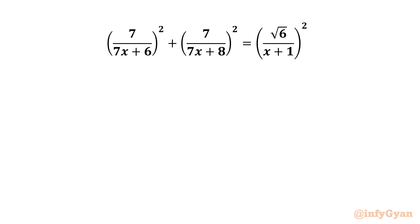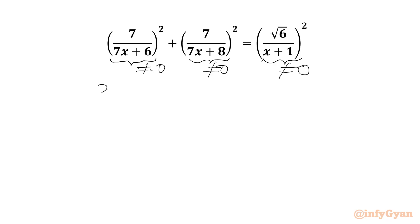Let's get started by writing our denominators cannot be 0. So 7x plus 8 cannot be 0, x plus 1 cannot be 0. Our restricted list would be negative 1, negative 6 over 7, and negative 8 over 7.